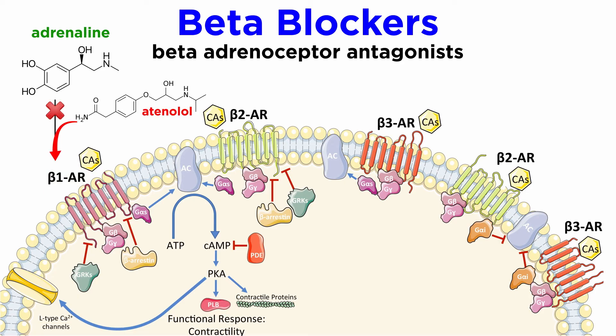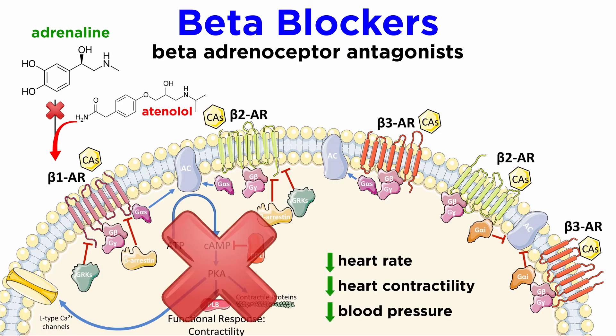When beta blockers such as atenolol are administered, the circulating adrenaline is antagonized, reducing the heart rate and contractility of the heart, which leads to the decrease of blood pressure.